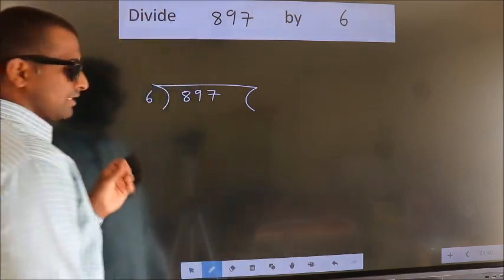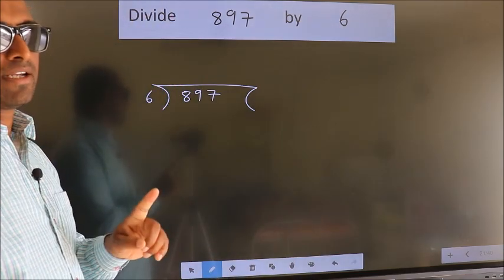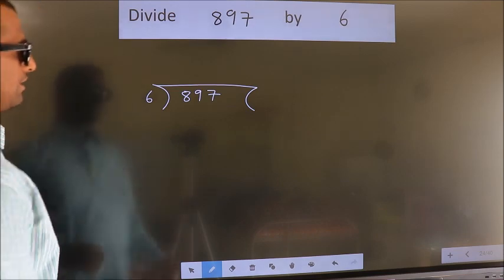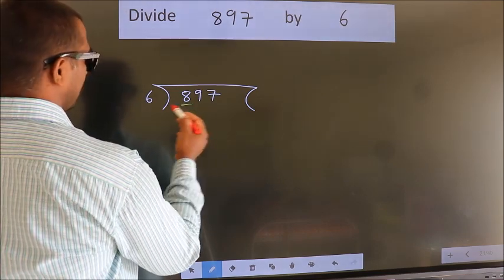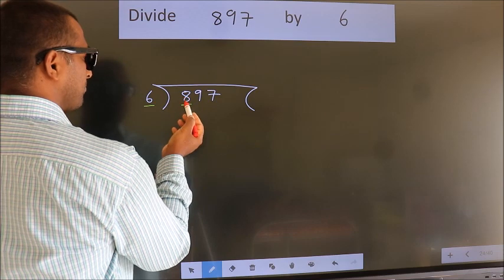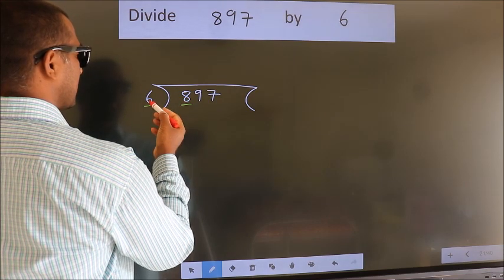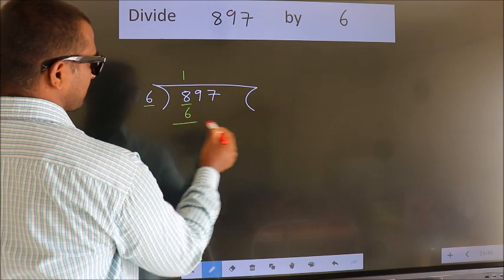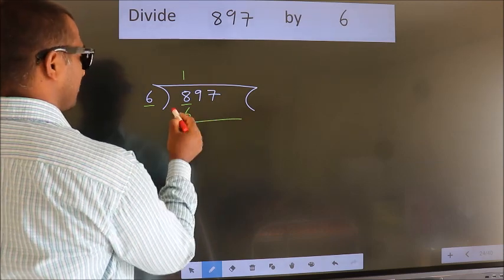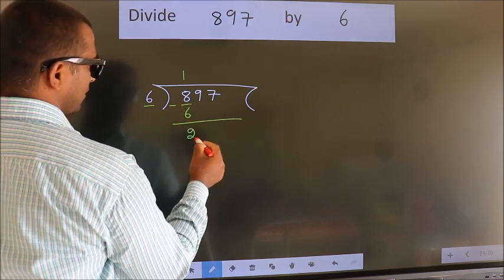This is your step 1. Next, here we have 8, here 6. A number close to 8 in the 6 table is 6 times 1, which is 6. Now we subtract. We get 2.